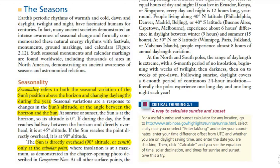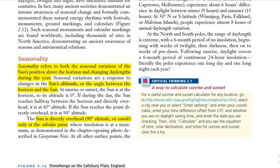With the word 'season' we remember what we have learned since childhood — there are four seasons: summer, winter, autumn, and spring. But if we go into the depth of this phenomenon, it is quite deeper than just the season names. The seasons affect our daily lives and activities. In geography, along with the term 'season,' the term 'seasonality' also comes, which refers to seasonal variation.